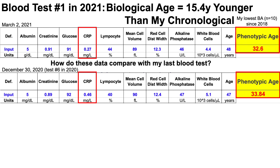What was the major change? I was able to reduce my C-reactive protein, which is a measure of inflammation, by about 40%. I'll get more into that in the upcoming slides about what I think is driving that reduction.